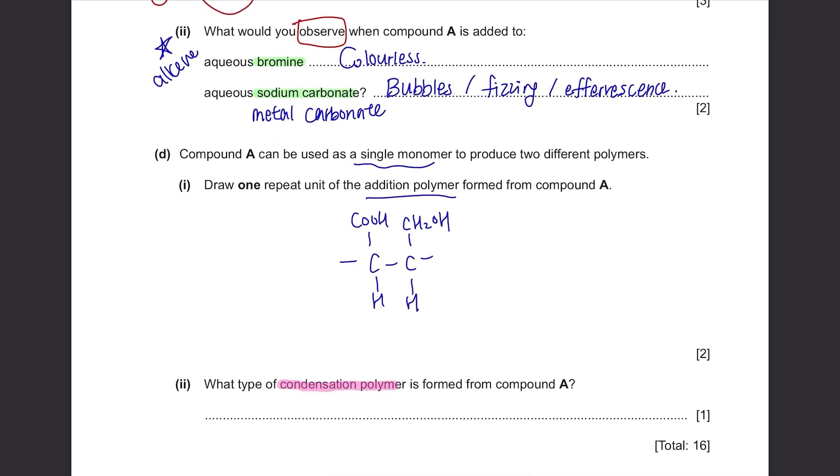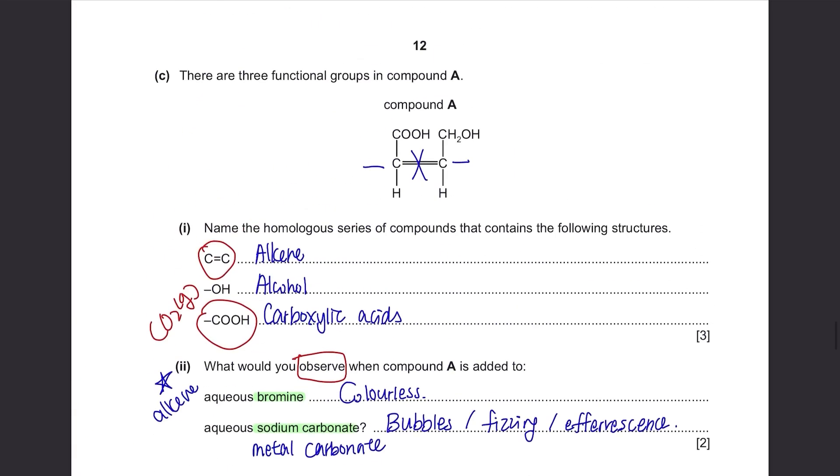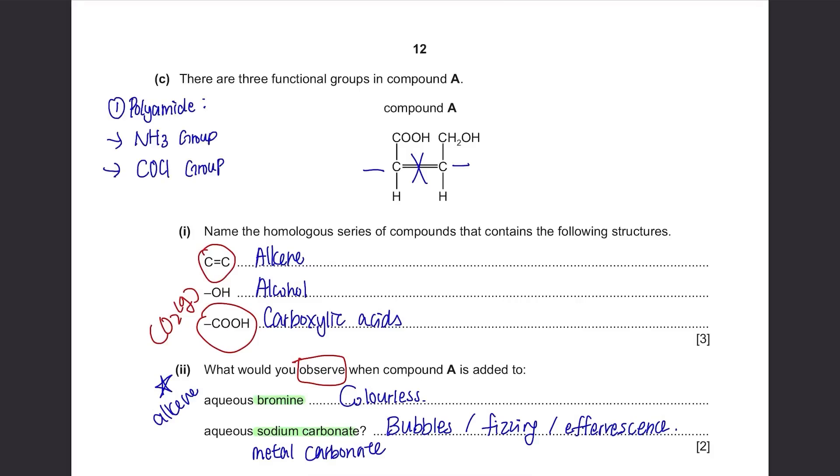What type of condensation polymer is formed from compound A? There are two types of condensation polymer. One is polyamide, which is nylon, and the other one is polyester, which is terylene. To form a polyamide, you'll need one compound with NH2 group at each end, and another compound with COCl group at each end. Only then you can form the amide linkage. However, we don't have neither of these two groups. For polyester, we'll need one compound with carboxylic acid at each end, and another compound with alcohol group at each end. Although this compound does not have two COOH groups or two OH groups, it has one COOH and one OH here, so it can still form polyester. So the answer is polyester.